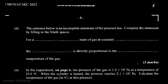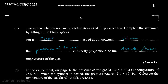Further down it says the sentence below is an incomplete statement of the pressure law — complete the statement by filling in the blank spaces. For a fixed mass of gas at a constant volume, the pressure of the gas is directly proportional to the absolute (or Kelvin) temperature, which is simply the temperature of the gas in kelvin.